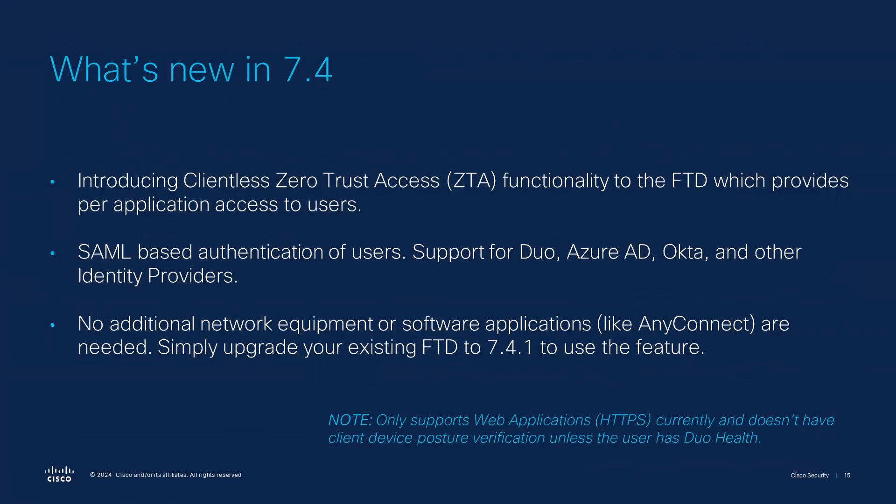For organizations that want to adopt a ZTA procedure, they were previously required to have additional software installed like AnyConnect on client devices, where the client application acted as a proxy and handled authentication and access. That is until 7.4.1, where no additional network equipment or software applications like AnyConnect are needed.